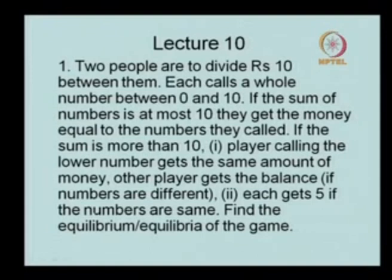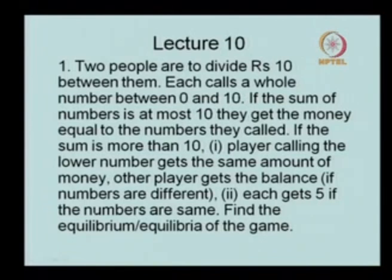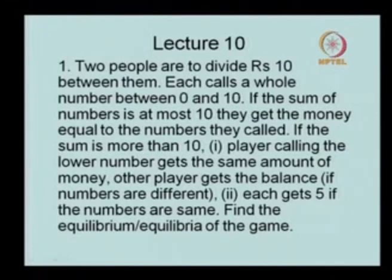Exercise: Two people are to divide 10 rupees between them. Each calls a whole number between 0 and 10. If the sum of the numbers is at most 10, each gets the amount they called. If the sum exceeds 10, the player calling the lower number gets that amount, the other gets the balance; if the numbers are equal, each gets 5. Find the Nash equilibrium or equilibria of this game using best response functions.